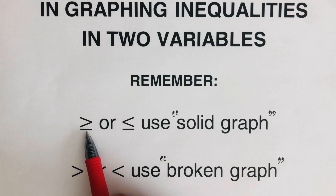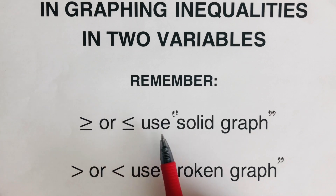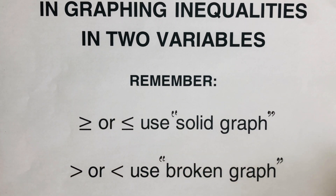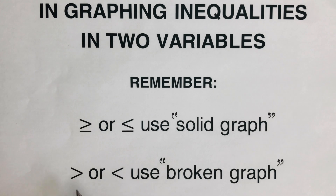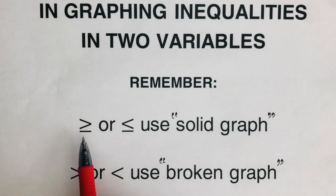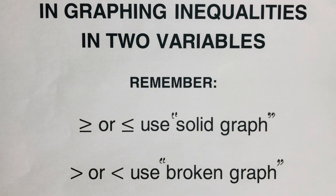We remember that if we have a greater than or equal to, or less than or equal to, we are going to use a solid graph. On the other hand, if we have a greater than or less than, we use a broken graph. So if there's no bar underneath, we use a broken graph, and if we have a bar underneath, we use a solid graph.